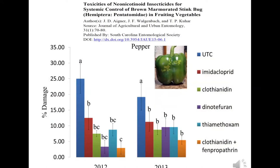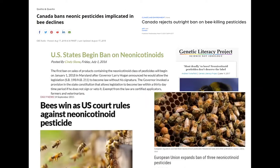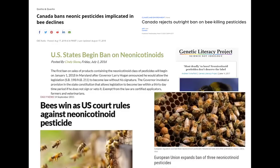The answer is yes — all neonicotinoids from imidacloprid to dinotefuran to thiamethoxam significantly reduced stink bug feeding on the fruit when applied through chemigation, in both peppers and tomatoes. We think what's happening is that stink bugs, in addition to feeding on fruit, need to drink — they tap into the plant vascular system to hydrate. They're likely picking up a lot of neonicotinoid from the plant's vascular tissue and being killed before they can even feed on the fruit.